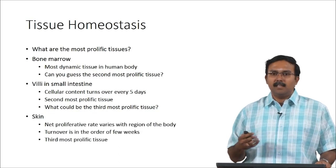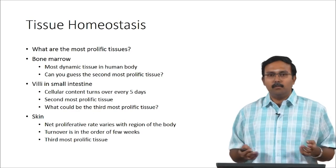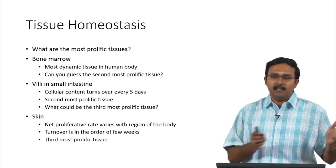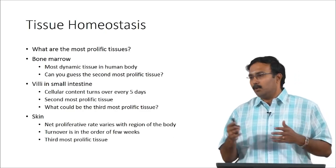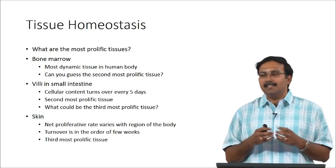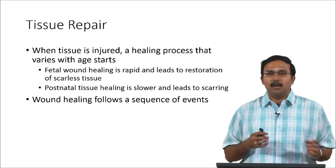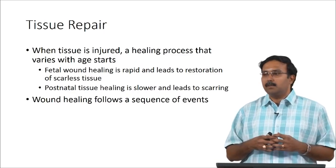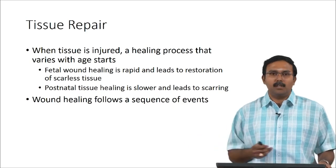The net proliferation rate can vary based on the region of your body and the turnover for skin is in the order of a few weeks. That is homeostasis — and every tissue has its own homeostasis. The repair process, however, is more uniform and is something common for any tissue.